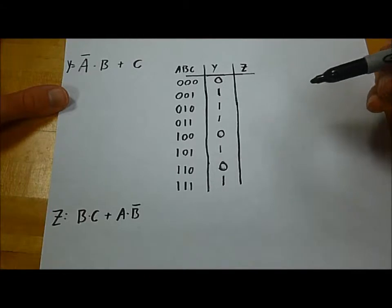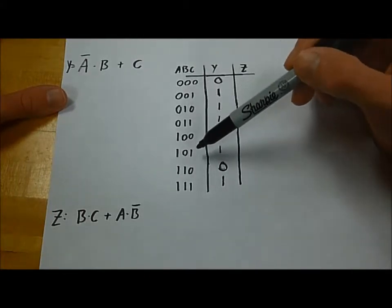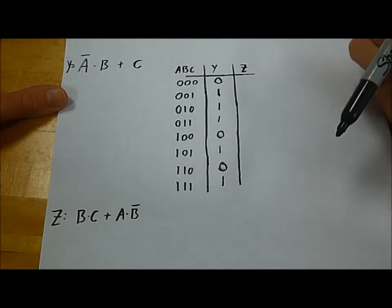What we just did, when we saw the pattern for C being a 1 always made a 1, is essentially logic reduction. Let's keep going on Z, and then we'll talk about how to actually do logic reduction.